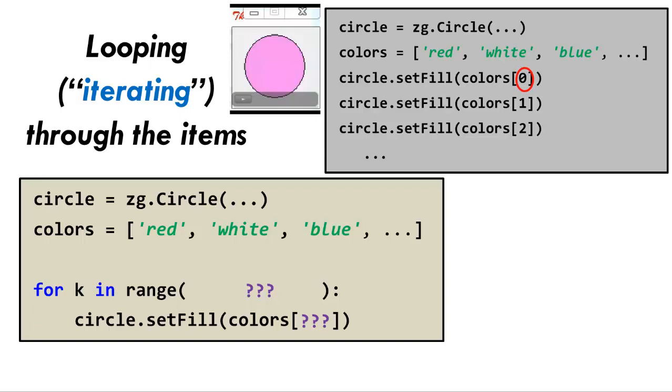The first time through the loop, we want a zero inside the square brackets. The next time through the loop, we want a one inside the square brackets. The next time after that through the loop, we want a two inside the square brackets and so forth.